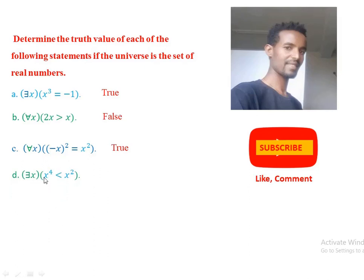Statement (d): there exists x such that x to the power of 4 is less than x squared. For x any real number, for example if we take x = 1/2, which is a real number, then (1/2)⁴ = 1/16 and (1/2)² = 1/4. Therefore 1/16 is less than 1/4. Since there exists such an x, namely x = 1/2, the statement is true.